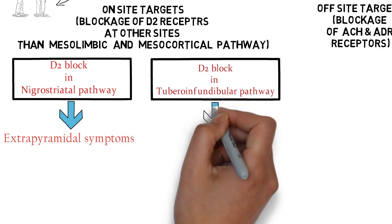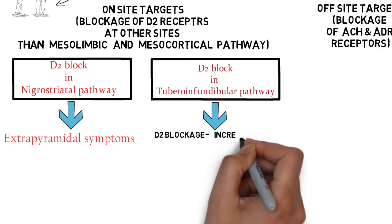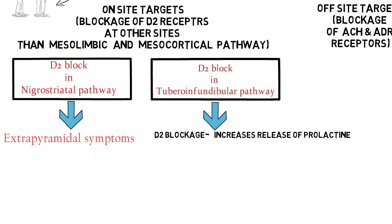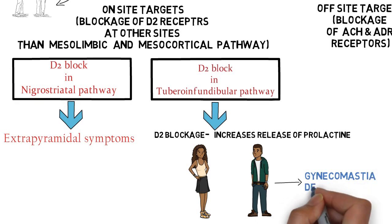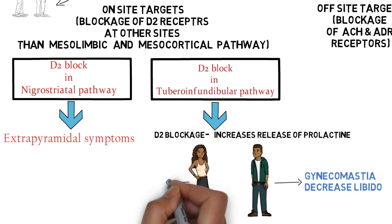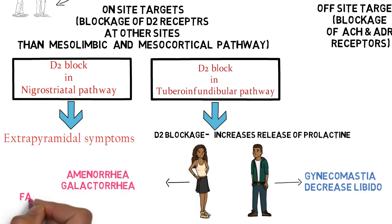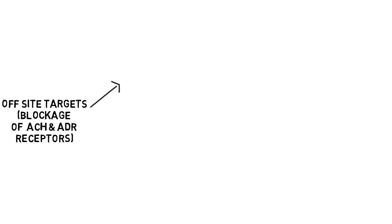Blockage of D2 receptors in the tuberoinfundibular pathway — which originates in the hypothalamus and ends in the pituitary — causes adverse effects related to prolactin. Dopamine normally inhibits prolactin release through this pathway, so blocking D2 receptors leads to increased prolactin levels. In males this causes gynecomastia and decreased libido — gynecomastia meaning development of breast tissue. In females it produces amenorrhea, galactorrhea, or a false positive pregnancy test.